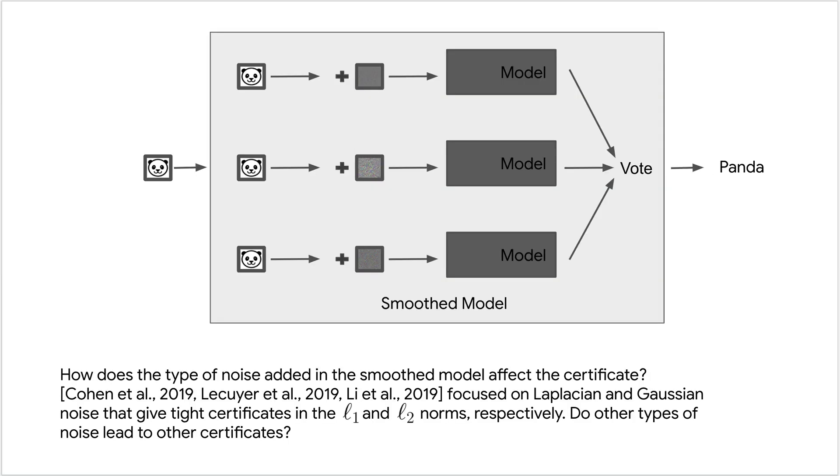So the way that randomized smoothing operates is as follows. We have an input, for example of a panda, and when we want to certify that this panda is robust to some amount of adversarial noise, we create n copies of this input. We add noise to each of these inputs from some distribution and pass these each to a model. The model then gives an output that is somewhat different each time because we've added a different amount of noise, and then we take a vote. If the majority vote says panda, then we classify this input as panda.